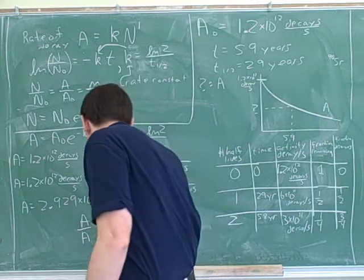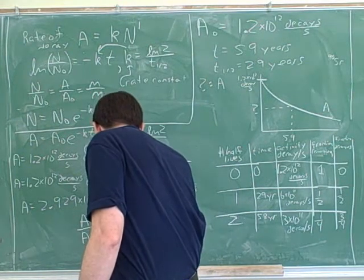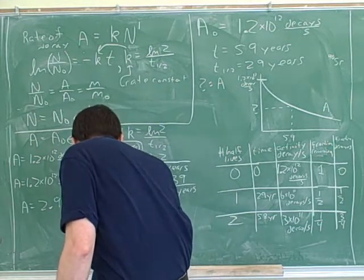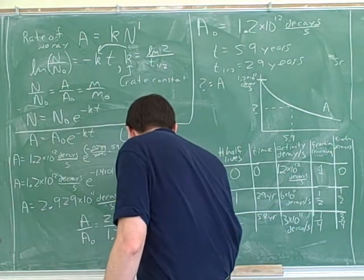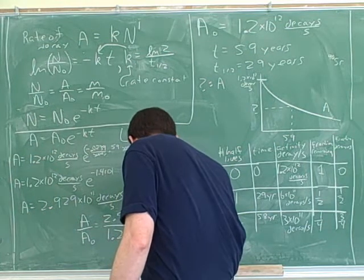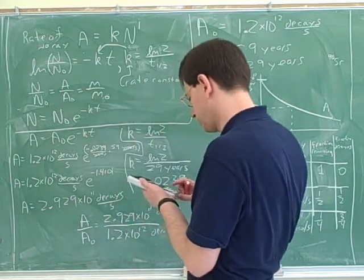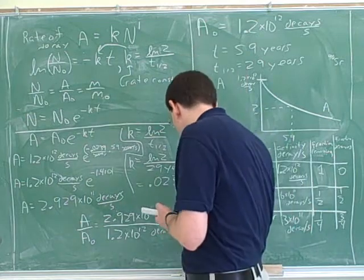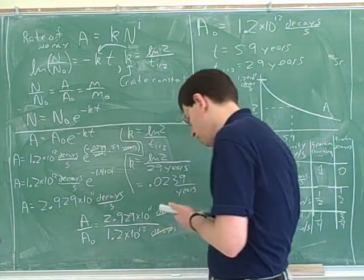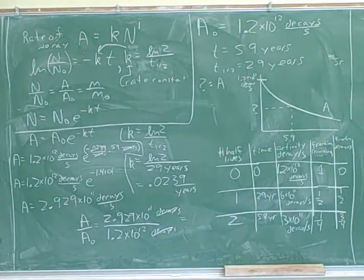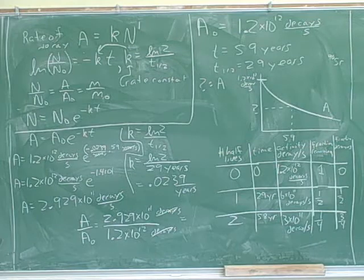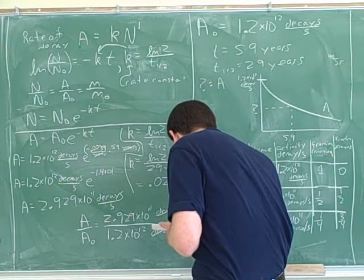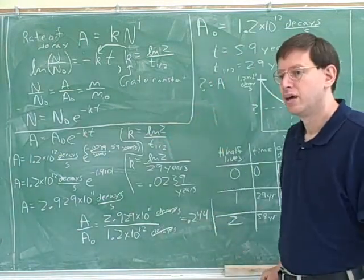So what do I put on top? 2.929 times 10 to the 11th divided by 1.2 times 10 to the 12th. What does this tell us?